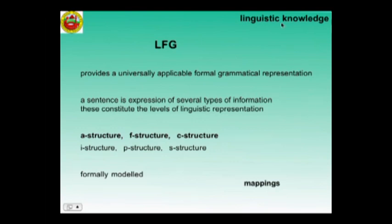We move on to Lexical Functional Grammar, which provides a universally applicable formal grammatical representation whereby a sentence is the expression of several types of information. These constitute the levels of linguistic representation: the argument structure, the functional structure, the C structure, the information structure, the prosodic structure, and the semantic structure. In bold you have A, F, and C, because they are the most elaborated — LFG is still elaborating models for the other three structures.